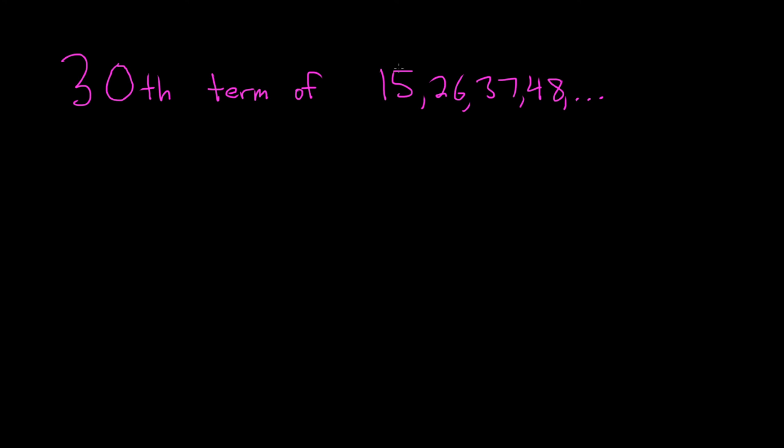So you can see that to get from 15 to 26, you add 11, and then to get from 26 to 37, you add 11, etc. So d here, which is called the common difference, is equal to 11. This is the number that we add to get from one term of the sequence to the next.